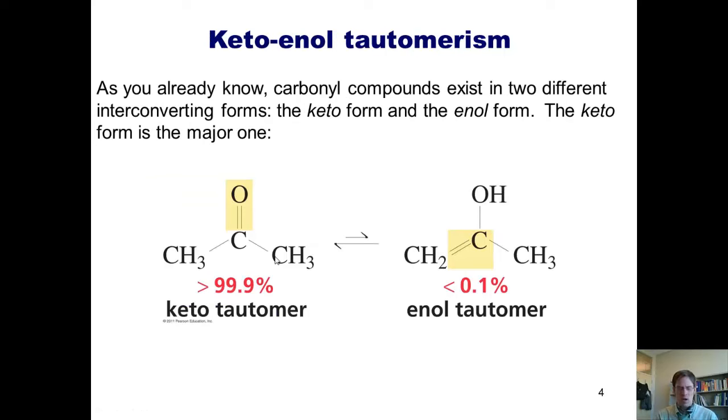As you already know, carbonyl compounds exist in two different interconverting forms: the keto form, over here, and the enol form, shown over here. The process of interconversion is called tautomerism. And as you should also already know, the keto form is the major one. Thus, ketone compounds like this one are naturally interconverting between their keto-tautomer and their enol-tautomer, with the keto being much more prevalent in solution.